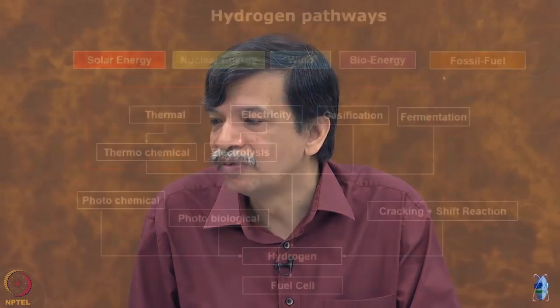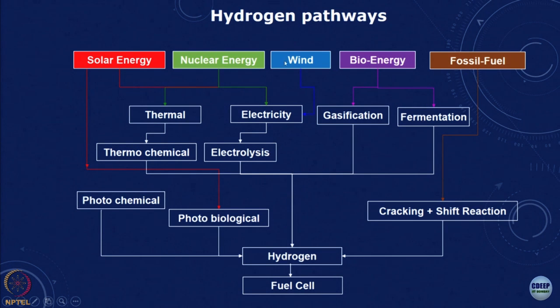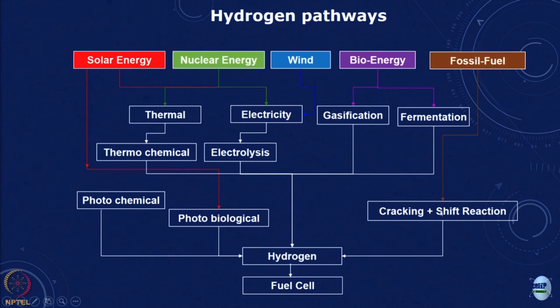Pathways to hydrogen include fossil fuels via cracking and shift reactions — steam methane reforming currently constitutes more than 90 percent of world hydrogen production. We can also look at hydrogen from nuclear, solar (photochemical and photo-biological routes), biomass gasification, and fermentation. There is a whole set of possible production routes.